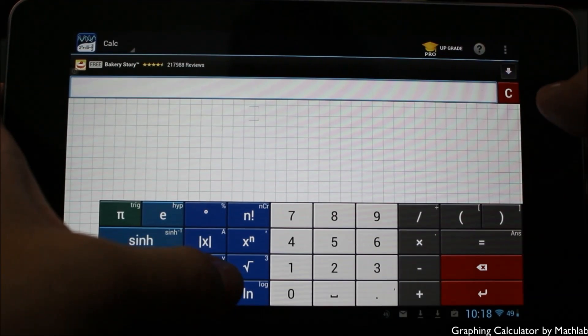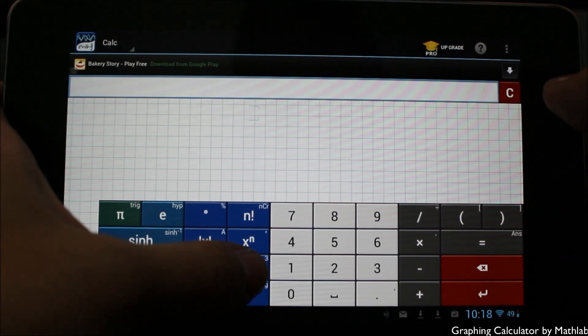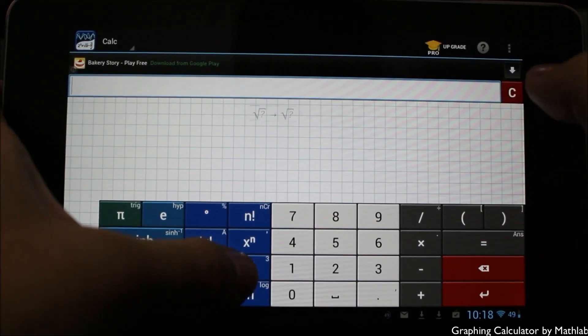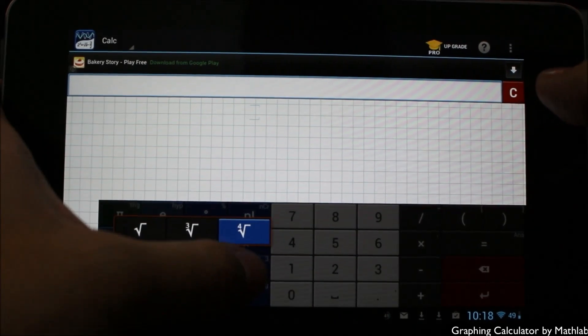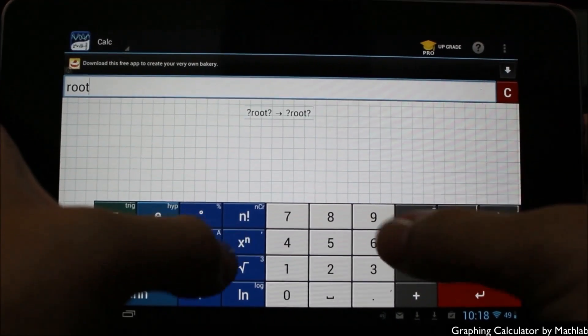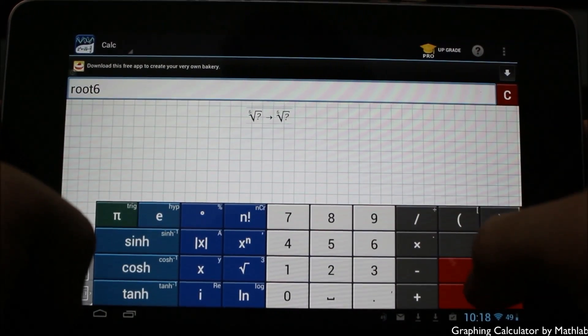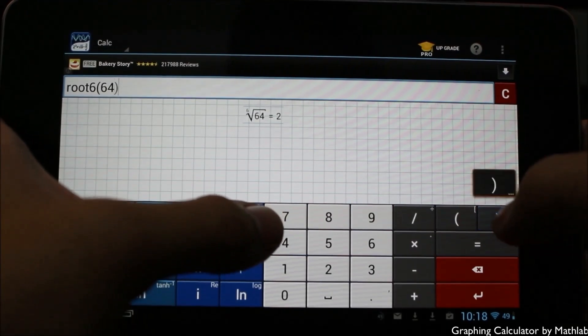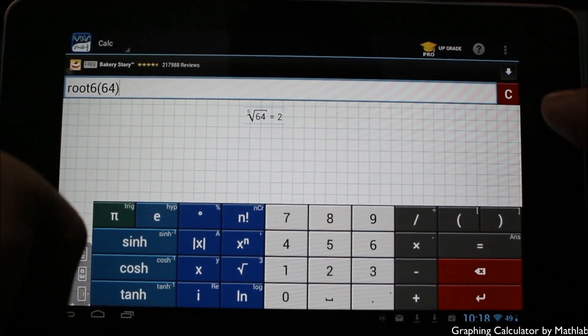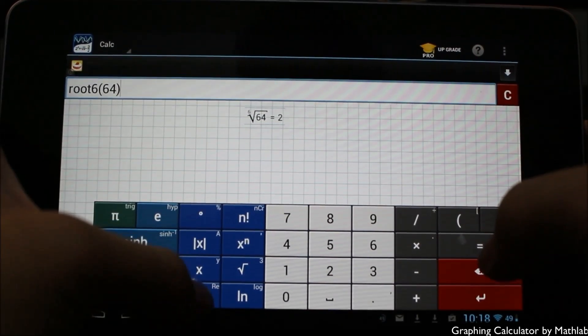Going down here, we'll go into the cubes if you want to type in any other cubes or roots. For example, if I was to tap this, you just get the square root. But if I hold it, you get other options, and I can easily change the number. So if I was to say root of six, and give it a number like 64, you can see that will automatically equal two.